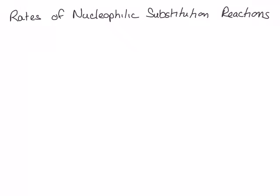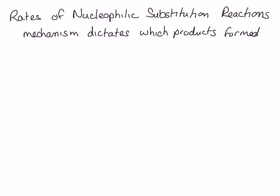The topic of this lecture will be the rates of nucleophilic substitution reactions. The mechanism by which a nucleophilic substitution reaction occurs dictates the products that are formed. The mechanism that predominates — SN1 or SN2 — is the one that occurs the fastest. It's useful to be able to predict whether SN1 or SN2 will be fastest with a given set of substrate and nucleophile. In this video, we will discuss the factors that affect the rate of SN1 and SN2 mechanisms.